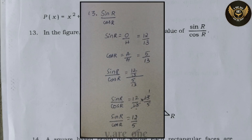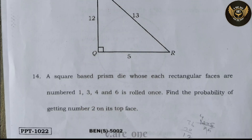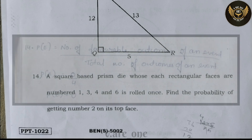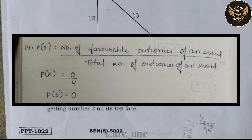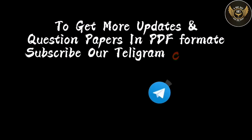The correct answer for sin R / cos R is 12/5. Fourteenth question: a square-based prism die whose rectangular faces are numbered 1, 3, 4, and 6 is rolled once — find the probability of getting number 2 on its top face. P(E) = number of favorable outcomes / total number of outcomes. Since 2 does not appear on any face, the probability of getting 2 is 0.